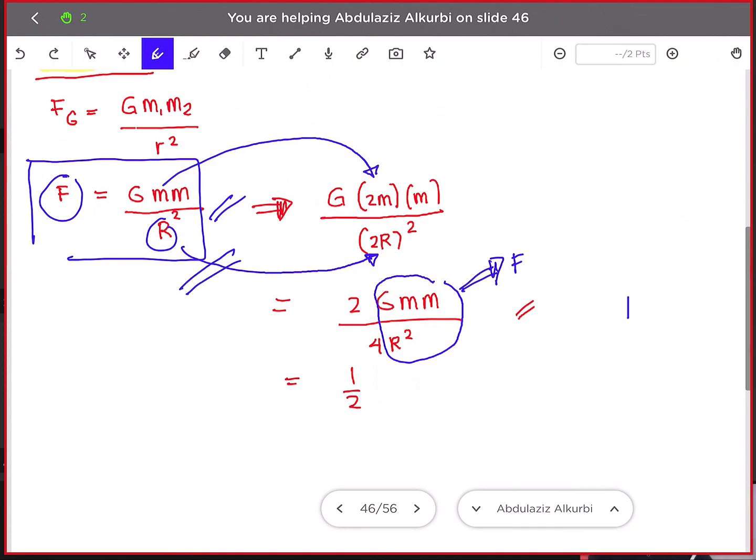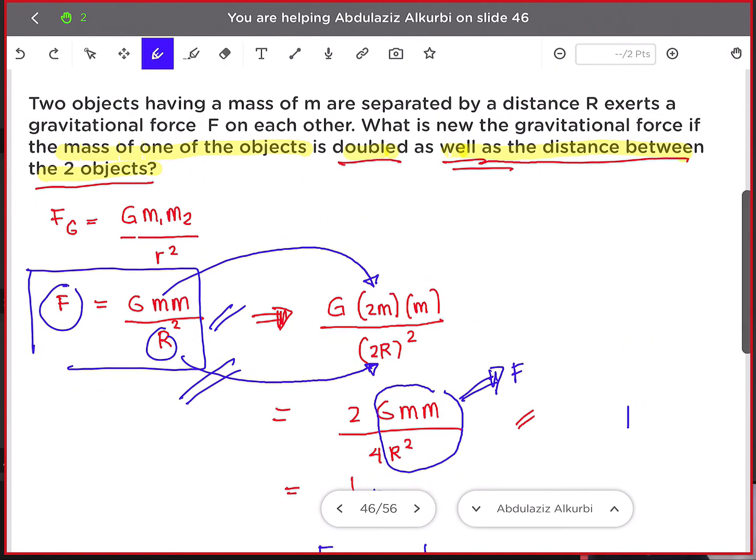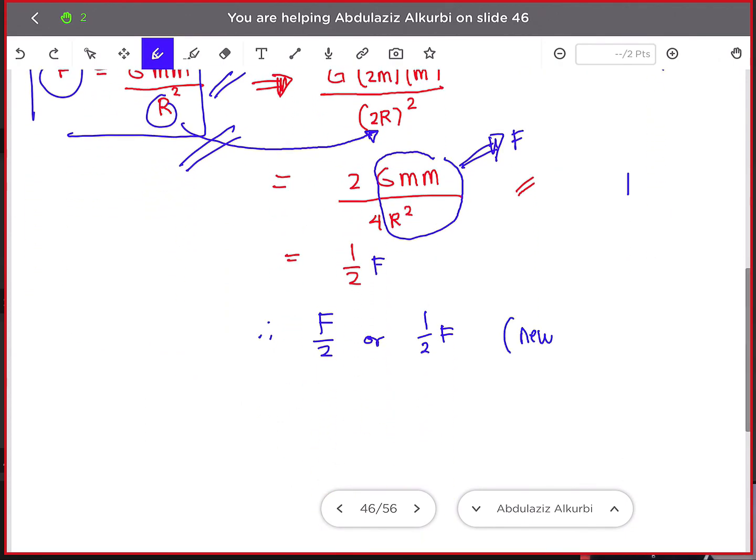Then I could just write F, or simply our final answer is one half of F. Therefore our answer is F over 2 or 1 over 2F. This is now the answer to the question, the new gravitational force.